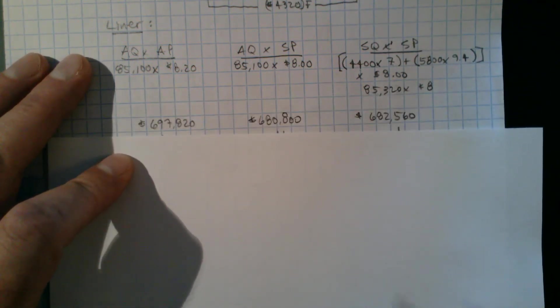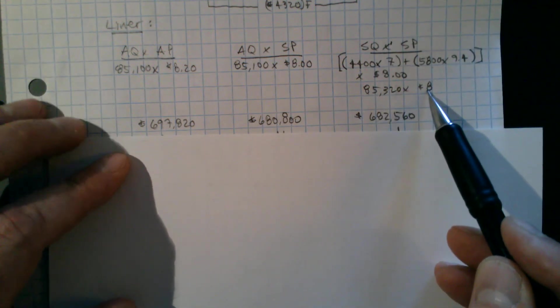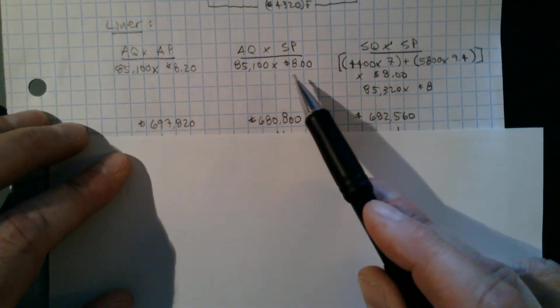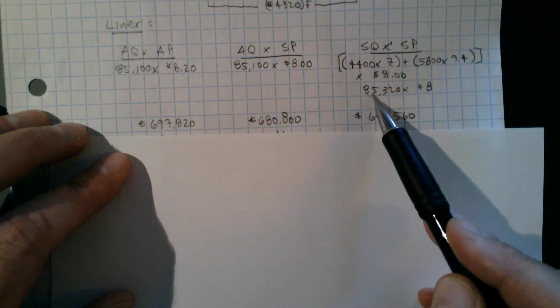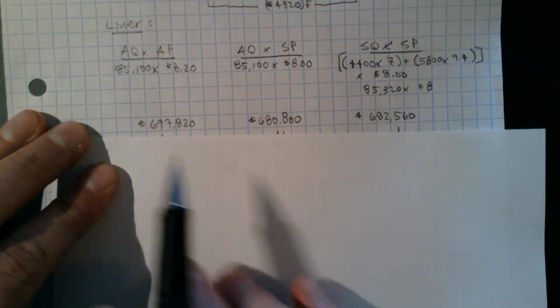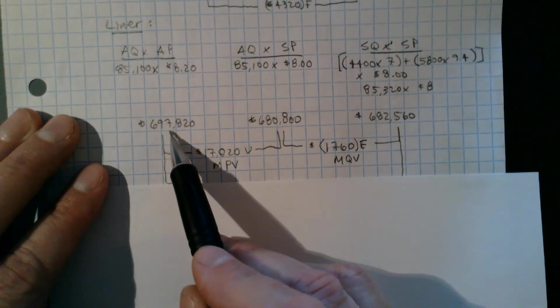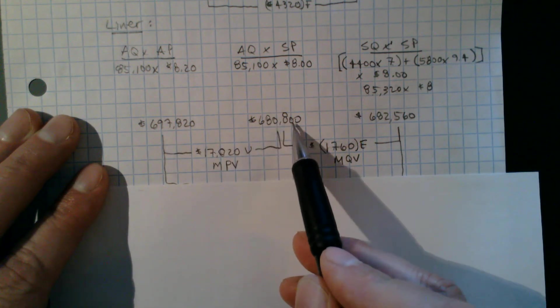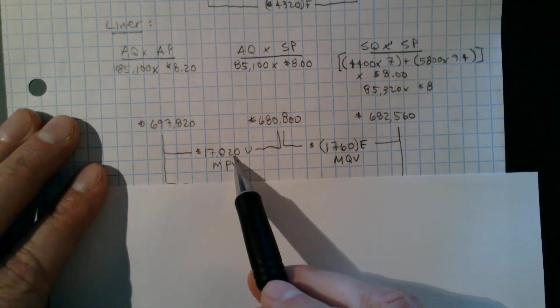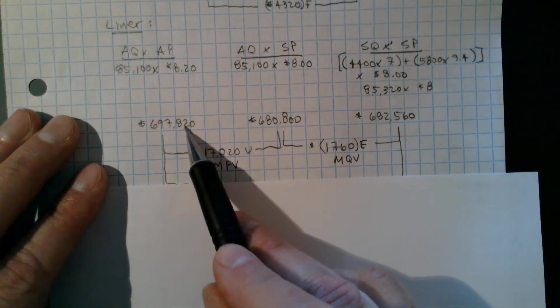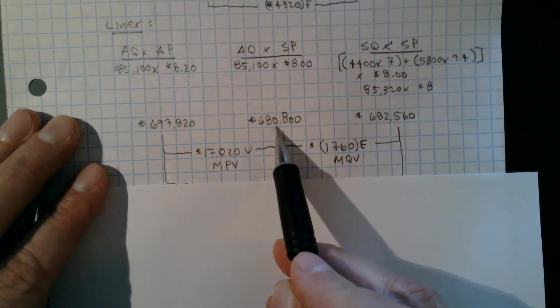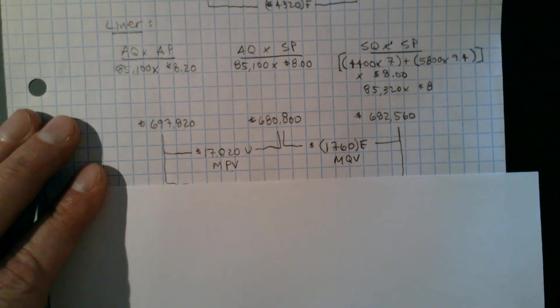So I do the math here. That gives me 85,320 times 8. I can see that I used a little less than what the standard called for. That's good news. So I do the math and again, I go left to right. So 697,820 minus 680,800 gives me 17,020, an unfavorable variance. I spent more than the plans that I should have at that level. That's my material price variance.